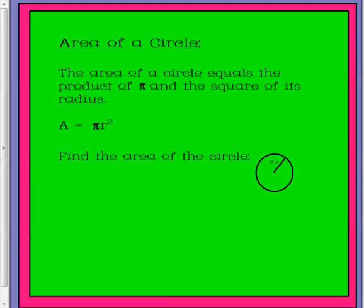To do area, we use this formula. Please write it down. We only can use radius for this. So if you're given diameter, you have to cut it in half to find your radius.